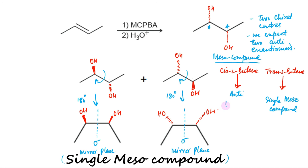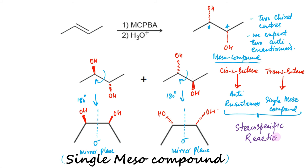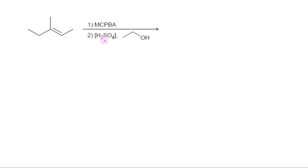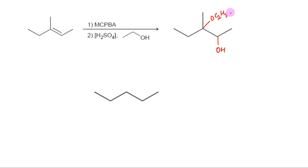Thus, epoxidation followed by ring opening with water is also a stereospecific reaction, as different starting materials give different products. Treating an alkene with MCPBA results in an epoxide. Further treatment of the epoxide with ethanol under acidic conditions results in a ring-opening reaction in which ethanol serves as the nucleophile. Nucleophilic attack occurs at the more substituted tertiary position, so the net result is the addition of OH and OEt across the alkene, with the latter being placed at the more substituted position.